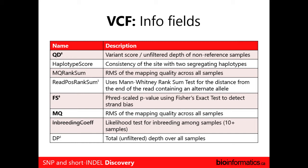There's a GATK best practices document, and one of the things they discuss is which info fields you'd actually use if you're trying to filter your variants. The fields shown are used for variant recalibration or filtering. QD is the quality score divided by the filtered depth. There's also a haplotype score — if you have two segregating haplotypes, it estimates their consistency. MQ rank sum and read position rank sum are also useful.